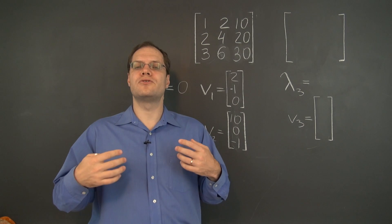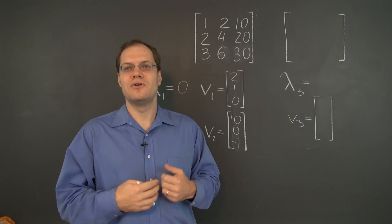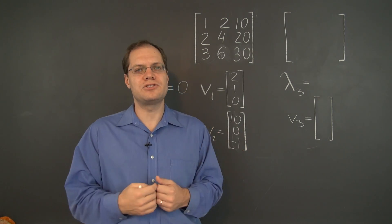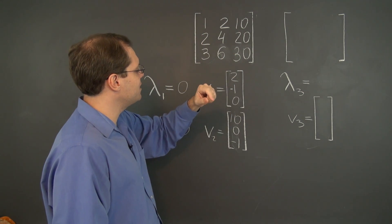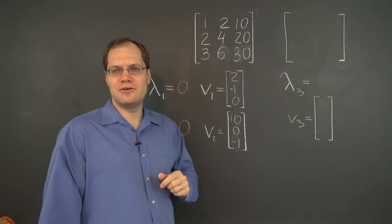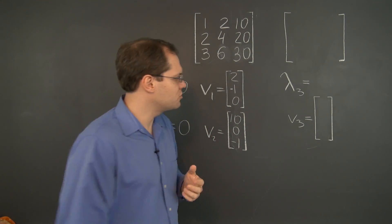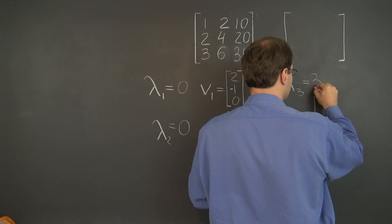So then, what's the remaining eigenvalue? Well, we can get that from the trace. The trace of this matrix is 35. The first two eigenvalues add up to zero. So the remaining eigenvalue is 35.